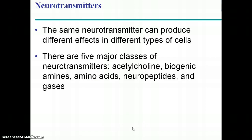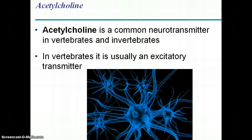Neurotransmitters are molecules that move between neurons and open up ion channels in the post-synaptic neuron causing it to depolarize. Acetylcholine is an excitatory neurotransmitter — blood vessels dilate, pupils dilate, heart rate increases, blood pressure increases — so acetylcholine gets you all revved up and going.